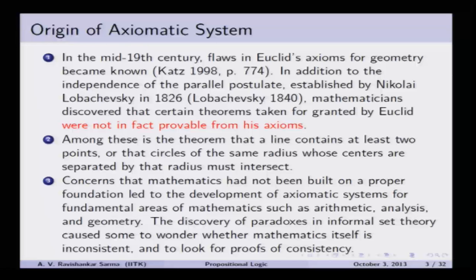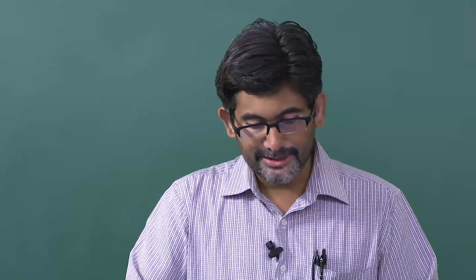Among these is the fifth postulate, which tells us that a line contains at least two points, or that circles of the same radius whose centers are separated by that radius must intersect. This created problems and led to different theories about whether the angles of a triangle sum to 180 degrees, or greater than 180 degrees. This is one thing that led to thinking in a different way — non-Euclidean geometry — and making proofs more rigorous, which Hilbert took up in his axiomatic system.